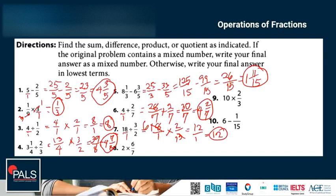Number 8. 2 over 1. So 2 times 6 is 12, 1 times 7 is 7. It's equal to 1 and 5 over 7.